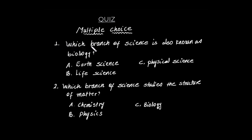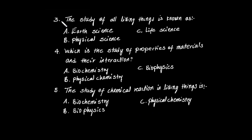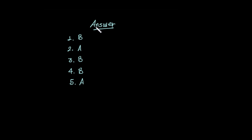Question 1: Which branch of science is also known as biology? A) Earth science, B) Life science, C) Physical science. Question 2: Which branch studies the structure of matter? A) Chemistry, B) Physics, C) Biology. Question 3: The study of all living things is known as? A) Earth science, B) Physical science, C) Life science. Question 4: Which is the study of properties of materials and their interactions? A) Biochemistry, B) Physical chemistry, C) Biophysics. Question 5: The study of chemical reactions in living things is? A) Biochemistry, B) Biophysics, C) Physical chemistry.